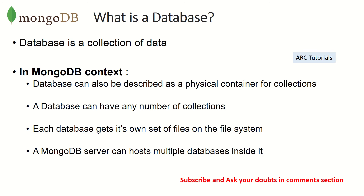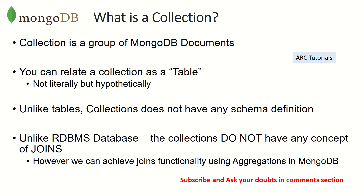So in this episode we'll learn about what is a database, what is a document, and what is a collection. What is a database? In general terms, a database is a collection of data. In the MongoDB context, a database is described as a physical container of collections. There will be multiple databases and a lot of collections. A database can have any number of collections. Each database gets its own set of files on the file system, and a MongoDB server can host multiple databases.